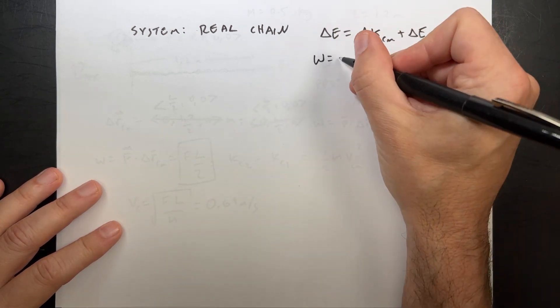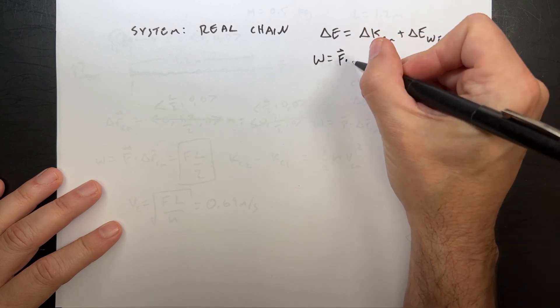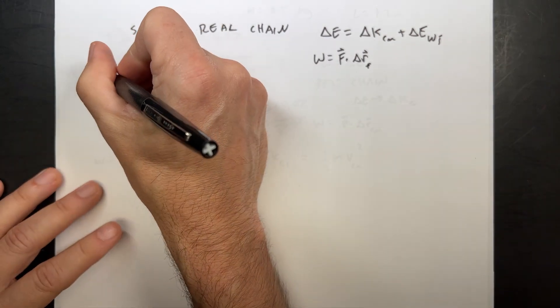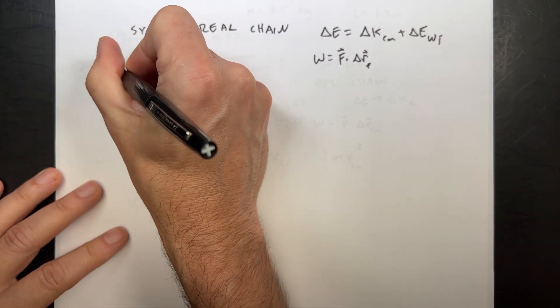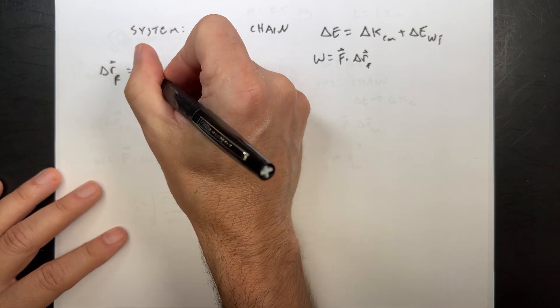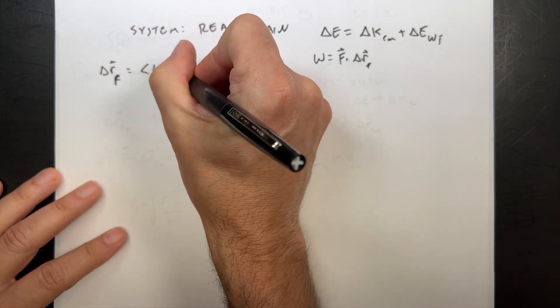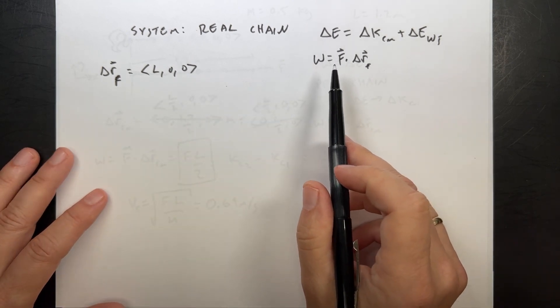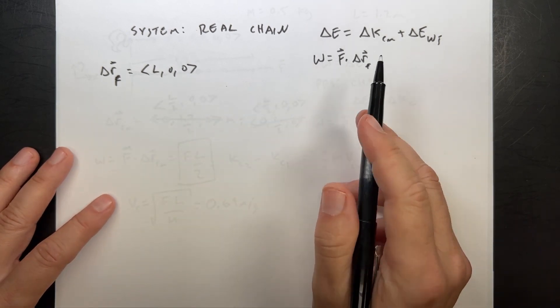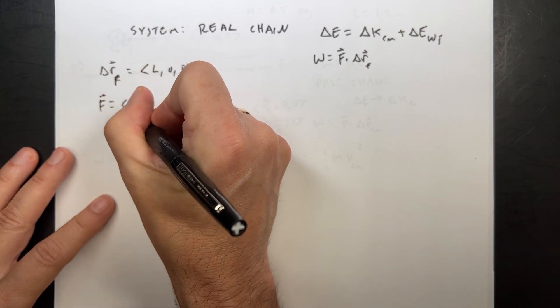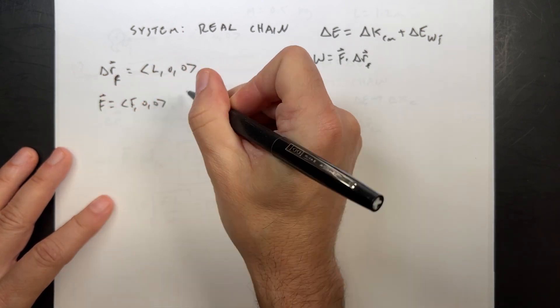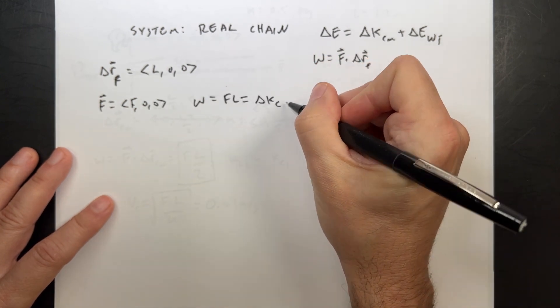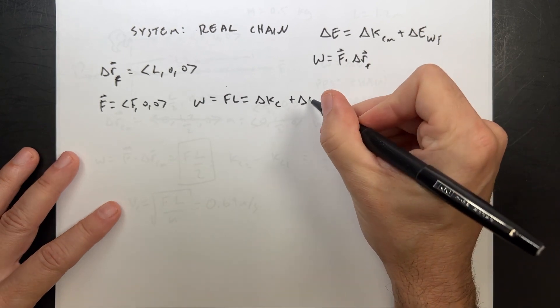And the work is going to be equal to the real work, which is F dot delta R F. How far did the force move? So in this case, delta R F is going to be equal to L zero, zero. It moved the whole length of the chain. So the real work is greater than the work done in the point particle system. I still have the same force. F is F zero, zero. So the work done is going to be F L.